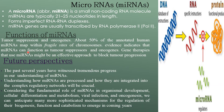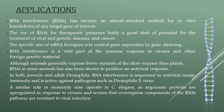Evidence indicates that miRNAs can function as tumor suppressors and oncogenes. Gene therapies that use miRNAs might be an effective approach to block tumor progression. The past several years have witnessed tremendous progress in understanding miRNAs — how they are processed and how they are integrated into complex regulatory networks. This is crucial considering the fundamental role of miRNA in organism development, cellular differentiation, metabolism, viral infection, and oncogenesis. We can anticipate more sophisticated mechanisms for the regulation of their biogenesis, function, and catabolism to emerge in coming years.